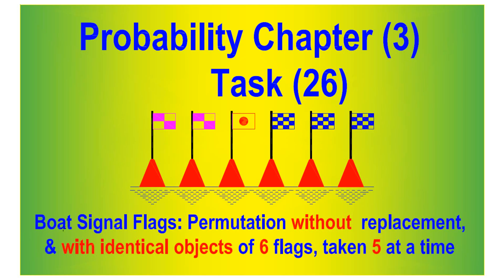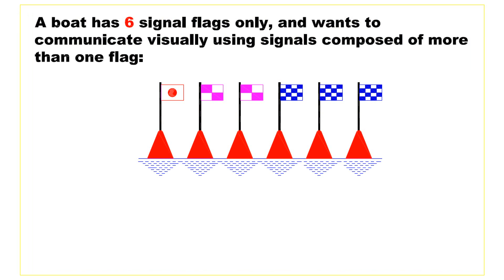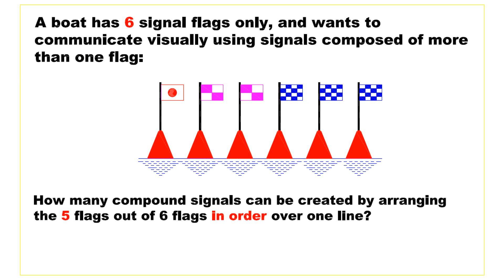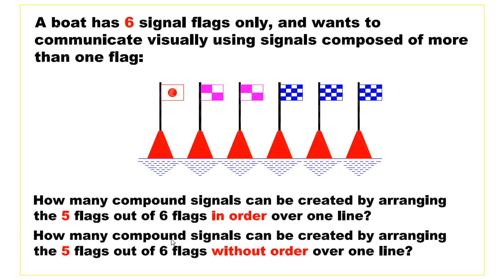In this video we will study boat signal flags using permutation without replacement and with identical objects. A boat has six signal flags and wants to communicate visually using signals composed of more than one flag. The first question is: how many compound signals can be created by arranging five flags out of six in order over one line? The second question is the same but without order.